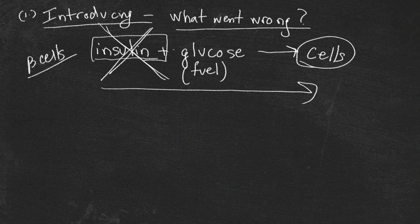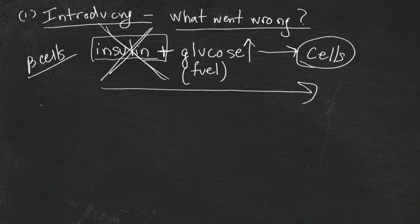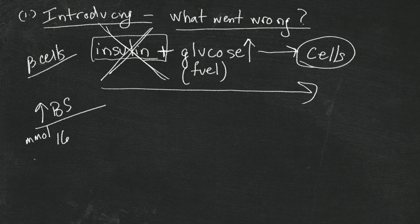Remember that insulin is a hormone that brings glucose into the cells. Cells need glucose as their primary source of fuel. If we don't have any insulin, the glucose doesn't get into the cells and starts building up in your blood. That's why when you're first diagnosed your blood sugars are really high — sometimes as high as 16 millimoles per liter, or 300 milligrams per deciliter and higher. It's not unusual for that to happen.